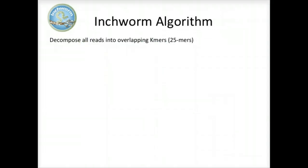The Inchworm algorithm works as follows. It first decomposes reads into a catalog of overlapping k-mers. By default, we use overlapping 25-mers.